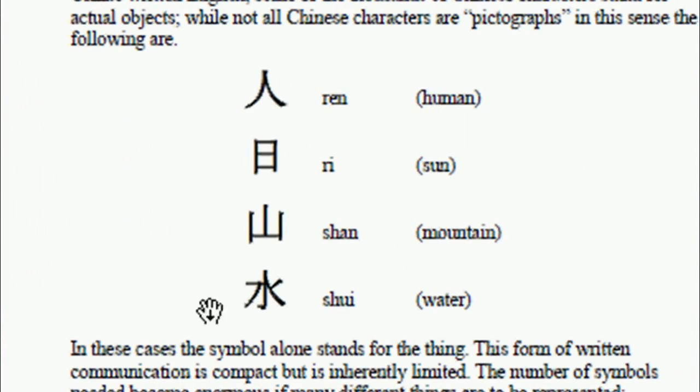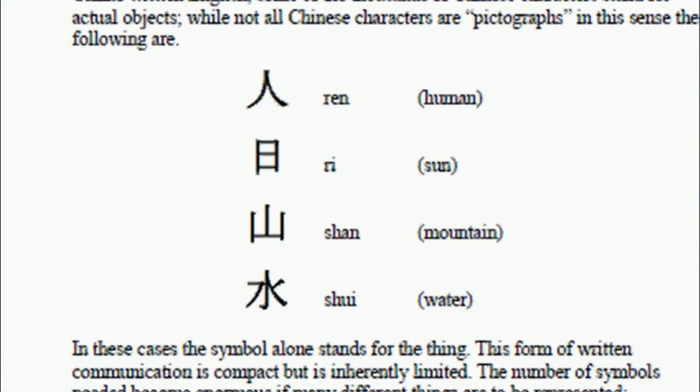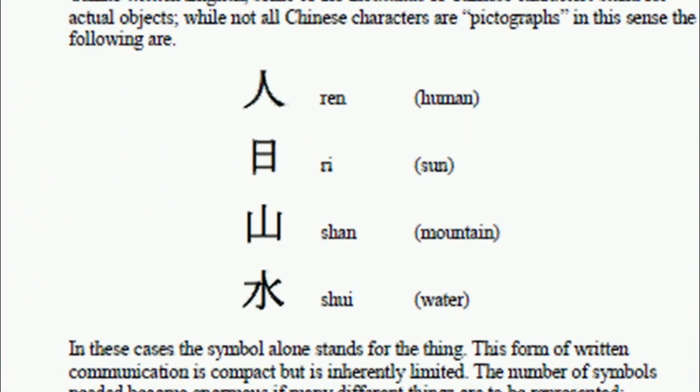About 3,000 symbols is necessary to be available and memorized in order for you to get by adequately in Chinese. For technical work in Chinese, you'd need twice that number.